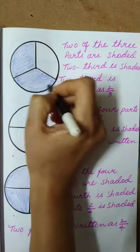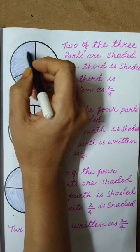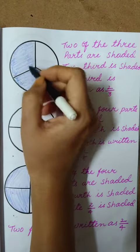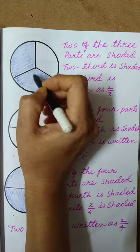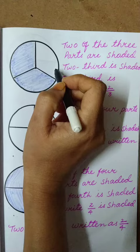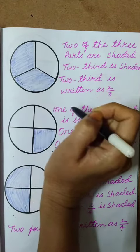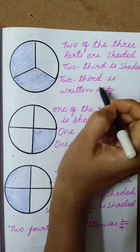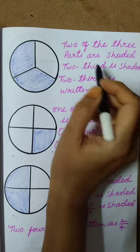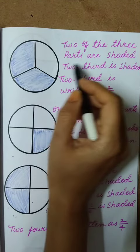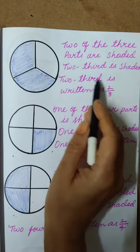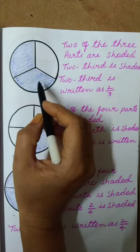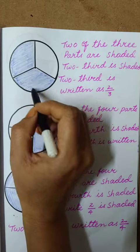Here one whole part I have taken. In that whole part I am making into three equal parts. In that, two I have shaded — we can write it as 2 by 3. Number of parts we write in the denominator, how many we have shaded we write in the numerator. Two of the three parts is shaded. Two third is written as 2 by 3.